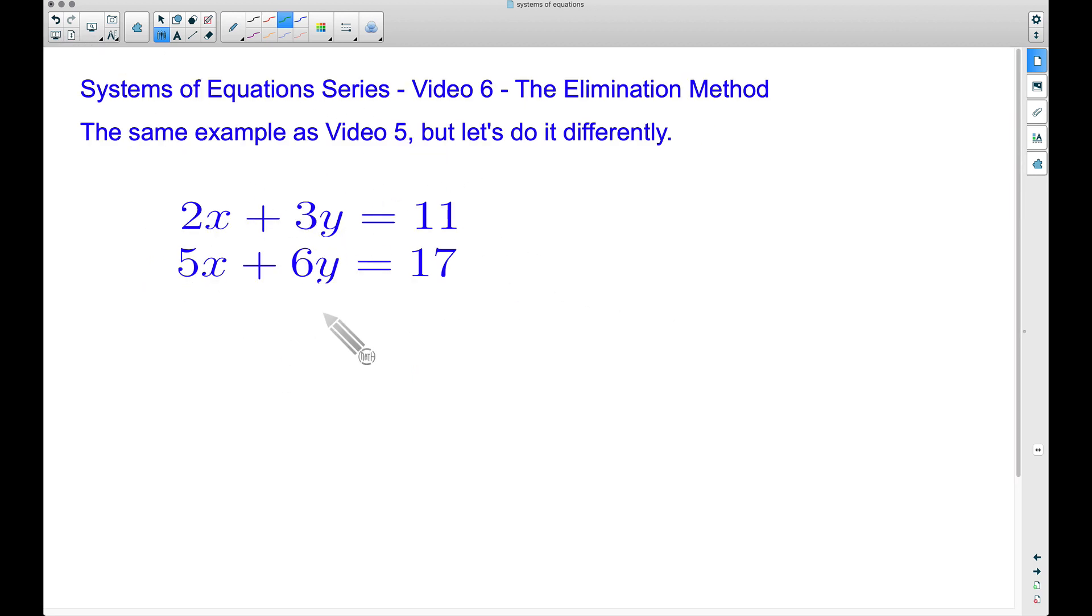One way that we can eliminate the X's here - in order to eliminate these we have to have opposite coefficients. This is a 2 and this is a 5, they do not get eliminated. So think of a number that 2 and 5 are both multiples of. First thing that comes to mind to me is 10. You could say 20 or 30, but 10 is the first thing that comes to mind. 2 will go into 10 and 5 will go into 10.